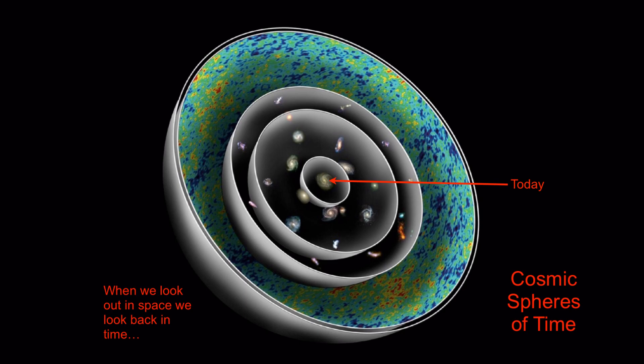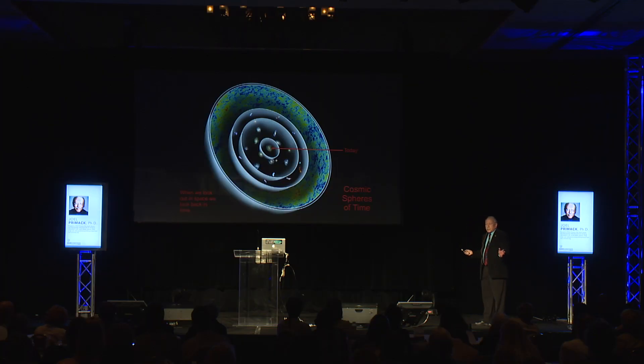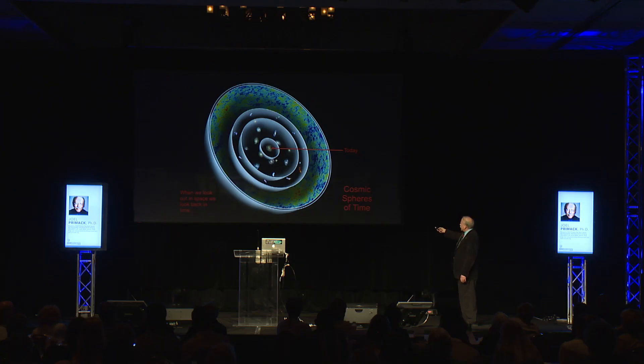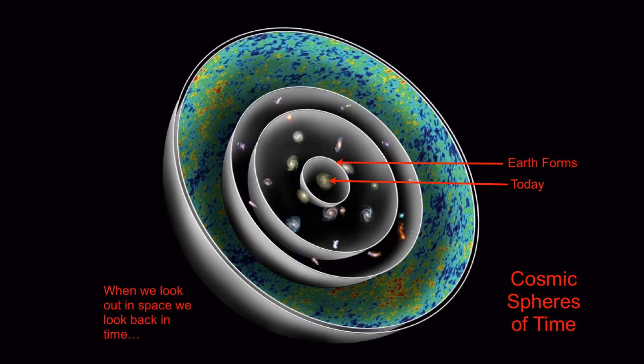Today we're just seeing light from the Sun and nearby things, but we are also seeing light that left a long time ago. This sphere represents light that left when the Earth and Sun were forming, about 4.5 billion years ago. The next sphere represents the light that's reaching us that left when big galaxies like ours first started to take the shapes that we see them to have today.